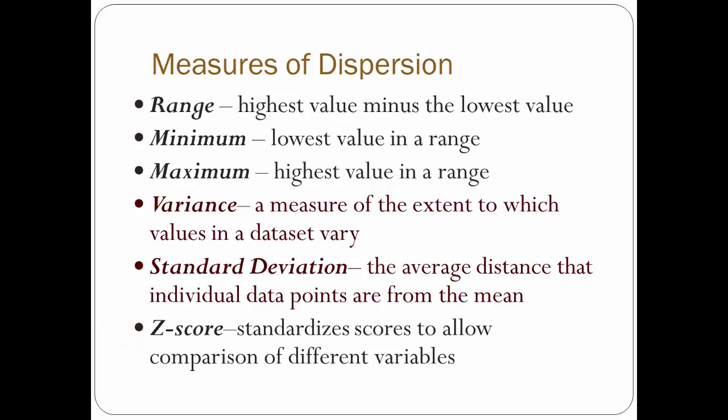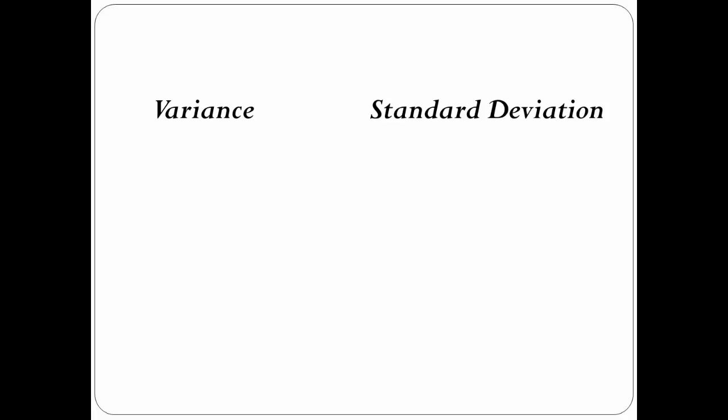The rest of this video will focus on variance and standard deviation. Let's learn the symbols for the two statistical measures, as that will help us understand how one can be used to calculate the other. For standard deviation of a population, you use the lowercase sigma character — the one that looks like a little o with a tail on top. For the standard deviation of a sample, it's simply a lowercase s. In some cases, you'll also see standard deviation denoted with an uppercase SD.